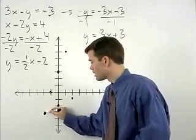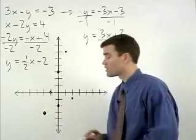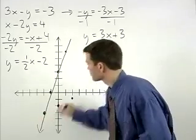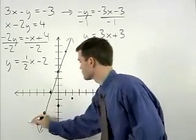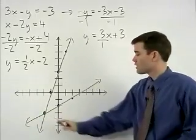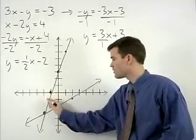So this is actually our point of intersection. If we graph our two lines, you can see that our point of intersection has the coordinates negative 2, negative 3.